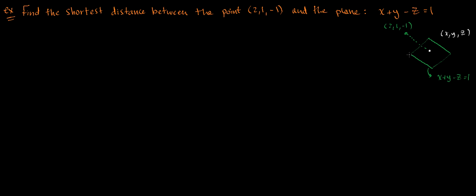The first step in these types of problems is to find the function you're trying to maximize or minimize and to find the constraint. Once you find the function, we can say that the gradient of the function is equal to lambda times the gradient of the constraint. So we need to find the function f and the constraint g.